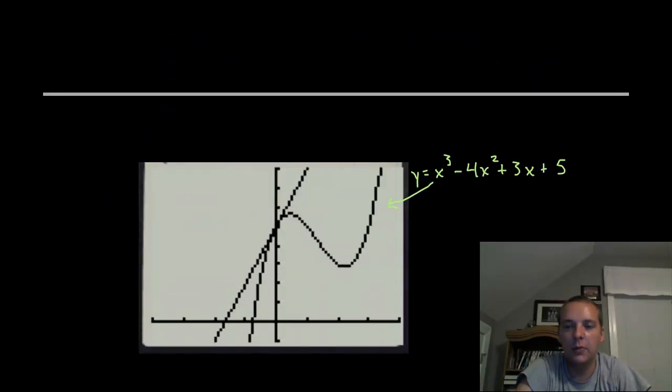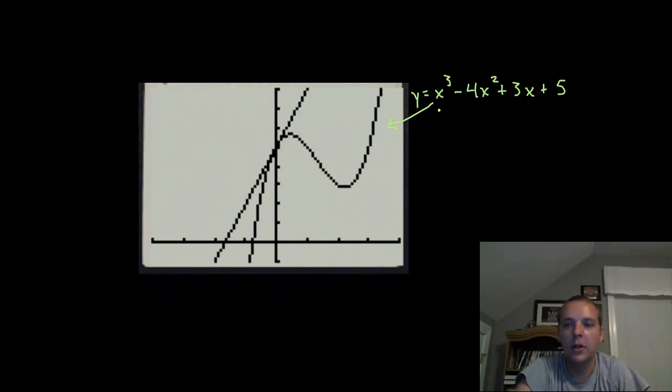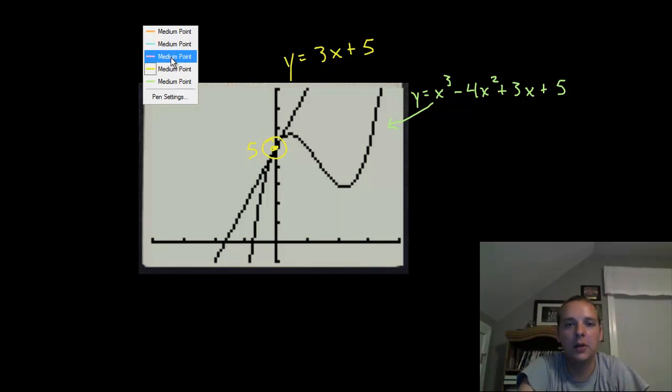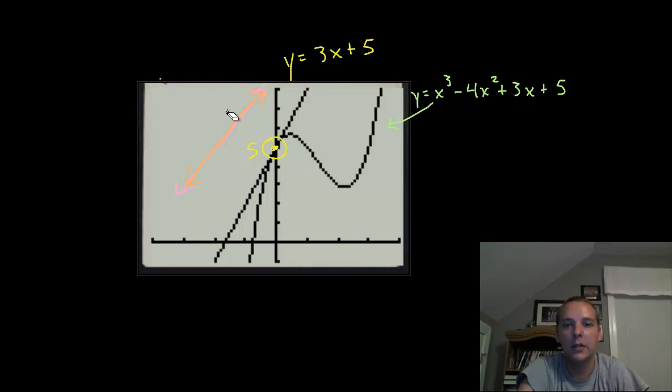Alright, so I went ahead and graphed this on the calculator. Here is y equals x³ minus 4x² plus 3x plus 5, and then sure enough I graphed y equals 3x plus 5. And sure enough you do see that it is in fact tangent at the point (0, 5). So you can verify these by just graphing them and seeing if it really does come down and become tangent to the curve. Now if you had graphed both of these and it was off the curve or away from the curve, you must have done something incorrect. Because it does need to come down and lightly touch the curve at the point in question.